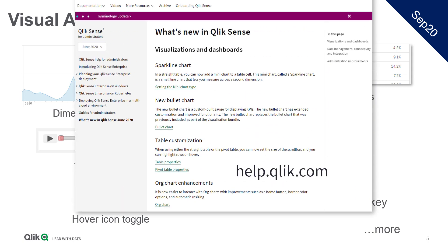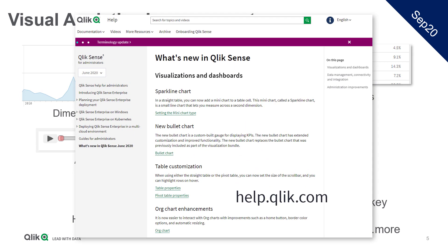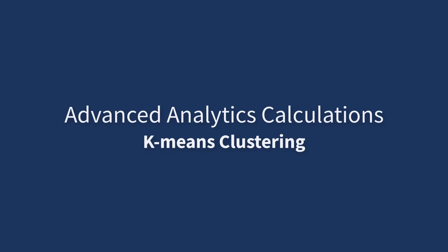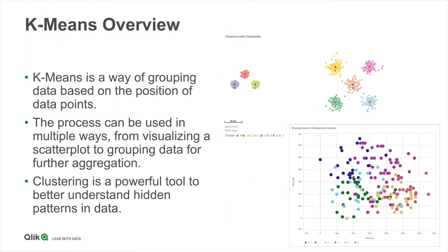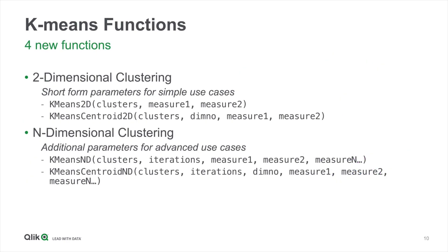Please review the Qlik help site and see the What's New document for this release to learn more. With the September 2020 release, we are introducing advanced analytics calculations onboard the Qlik associative engine. The first functions available support K-means clustering, allowing data points to be grouped into clusters based on similarity. This is a highly useful function for customer segmentation, fraud detection, and many other use cases. Going forward, we plan to introduce additional advanced calculations.